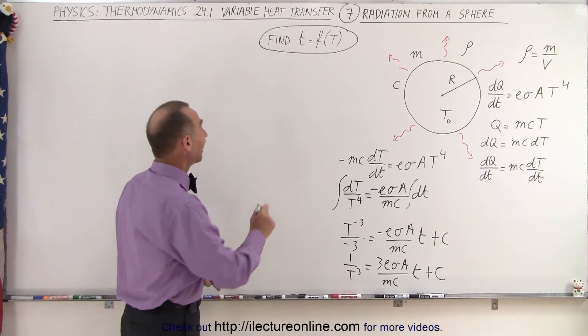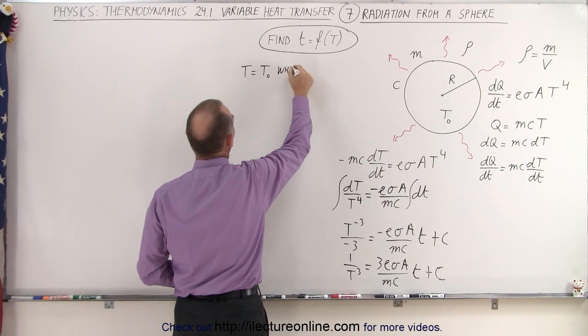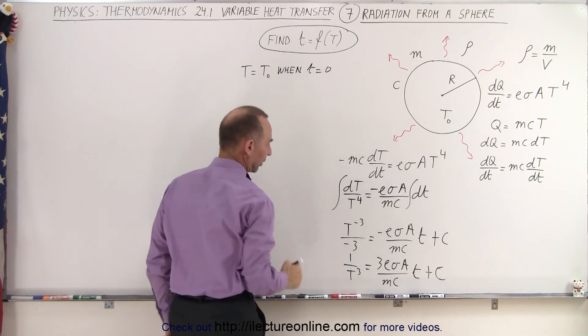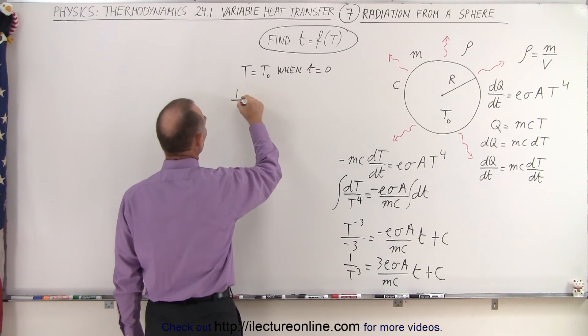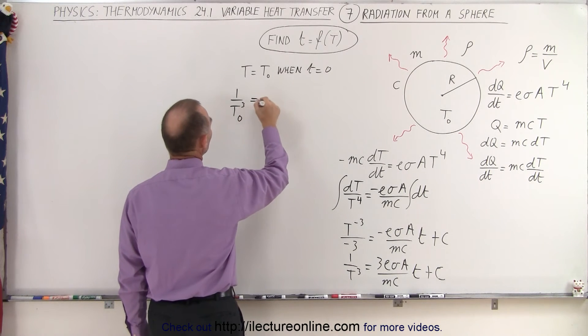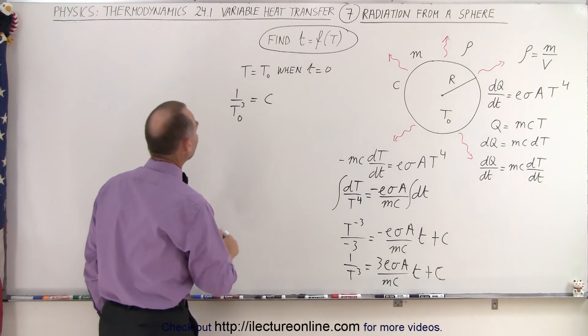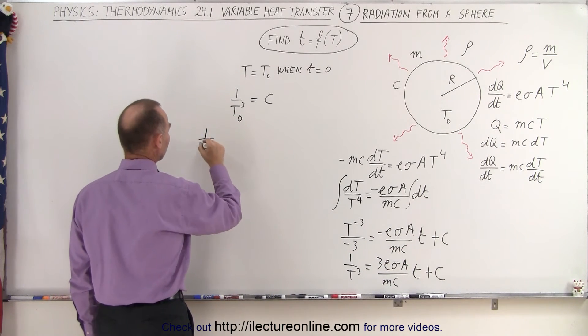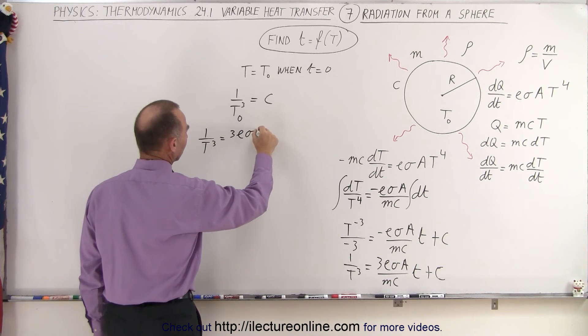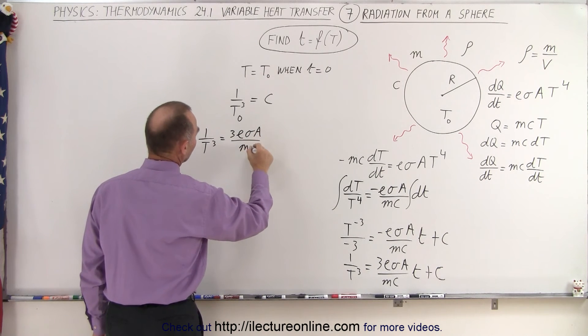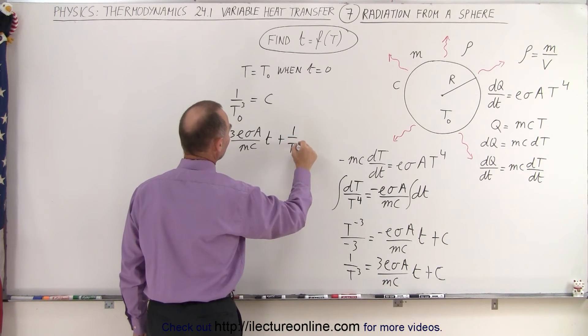All right, we do that by saying that T is equal to T sub-naught when the time is equal to zero. So if we plug in zero for time then T would become T sub-naught and so we can say that one over T cubed sub-naught is going to be equal to the constant of integration because this will go to zero. And that means that our equation becomes one over T cubed is equal to three E sigma A over MC times T plus one over T sub-naught cubed.